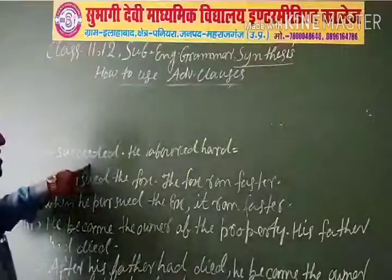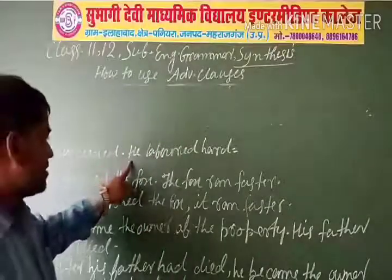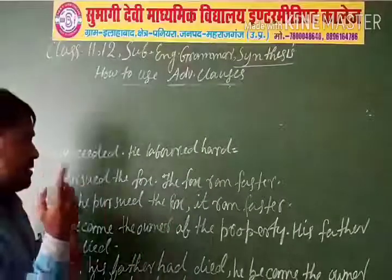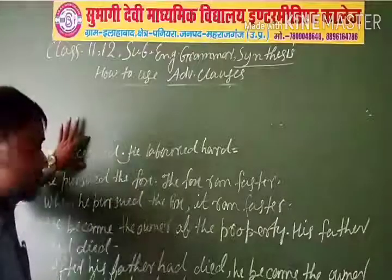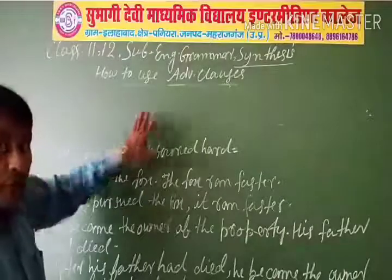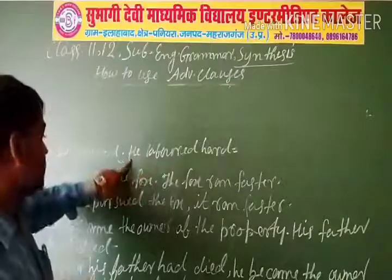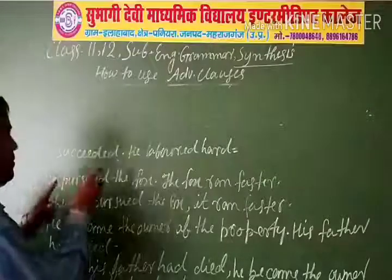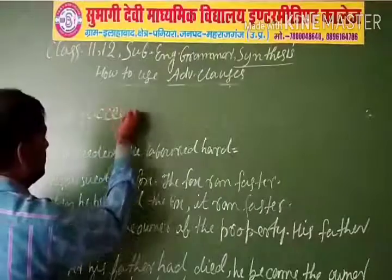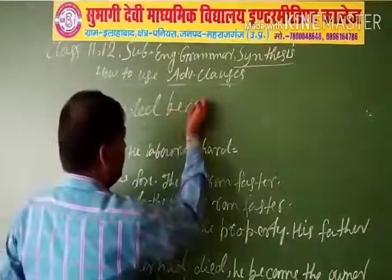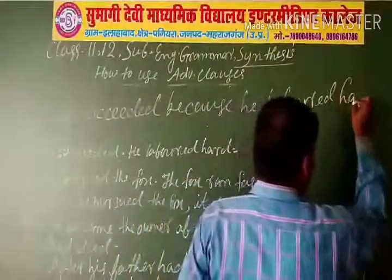For example, the first example: He succeeded. First sentence — He succeeded. Second sentence — He laboured hard. Listen carefully. What is the relation between these two sentences? He succeeded, he got success; he laboured hard. What is the reason by which he succeeded? The reason is he laboured hard. So we have to join: He got success. Why? Because he laboured hard. So, He succeeded because he laboured hard.